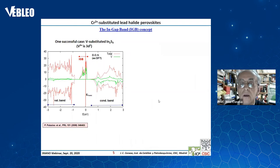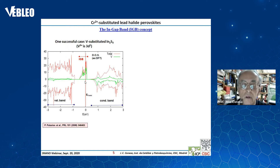Here is another example: vanadium is being substituted in indium sesquisulfide. Again, we can see that this allows a partially filled ingap band — the valence band is here, the conduction band is here, and again the ingap band is partially filled because this is the Fermi level.